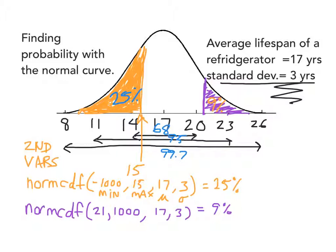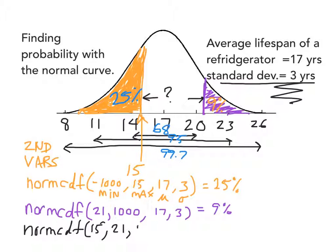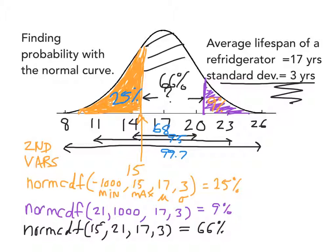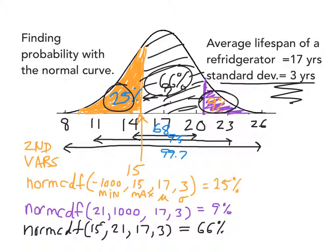You can also use normal CDF to figure out the percentage between two values. Suppose we want to know what percentage of refrigerators last between 15 and 21 years. We use normal CDF with 15 as the minimum and 21 as the maximum, using 17 as the average and 3 as the standard deviation. Typing that in gives you about 66%, and if you add all three results together, it actually comes out to be 100% of the graph.